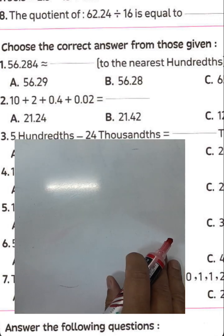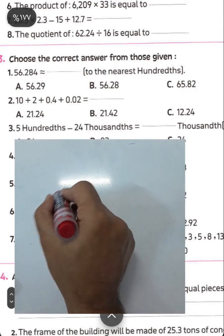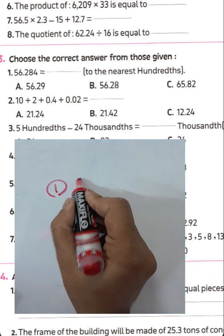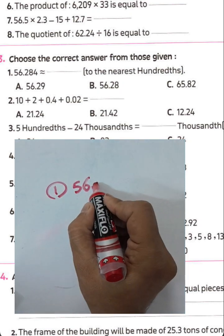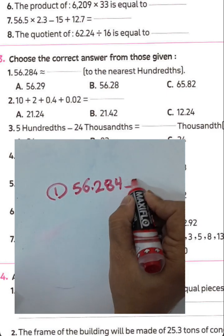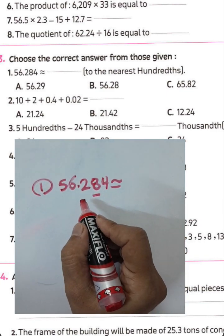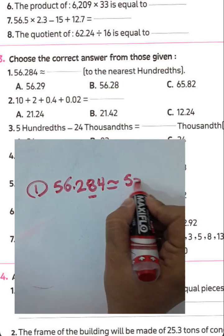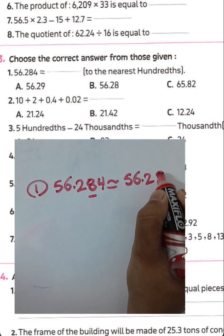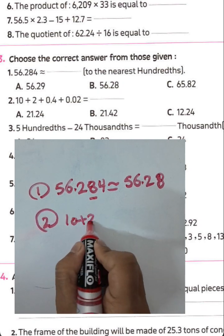Question number one: approximate 56.284 to the nearest hundredth. The digit in the thousandths place is 4, which is less than 5, so the result rounds to 56.28. Version number two: 10 plus 2 plus 0.4.